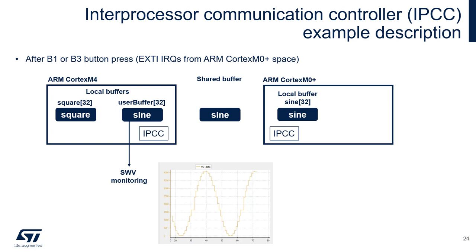After this operation, Cortex-M4 will clear the content of the shared buffer and send a confirmation that the data has been received by raising an interrupt in the RX direction. This interrupt is raised on Cortex-M0+ as a signal that it is possible to send new data to the shared buffer, since the previous data has already been used by Cortex-M4.